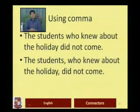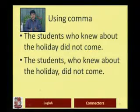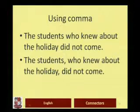In the defining version, the clause identifies which students specifically did not come — those who knew about the holiday. In the non-defining version, with a comma, we are making the group of students exclusive: all of the students who knew about the holiday did not come. So all of them who knew about it are the ones who did not come. That is the use of the comma.